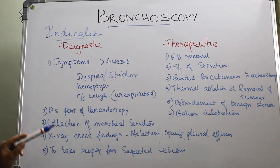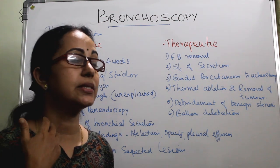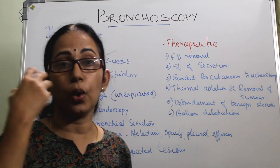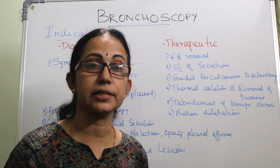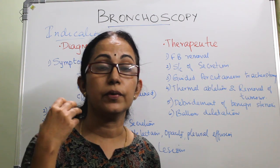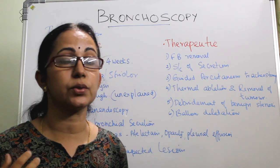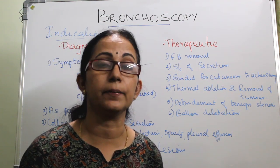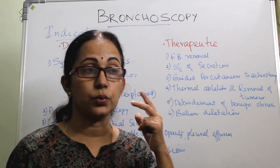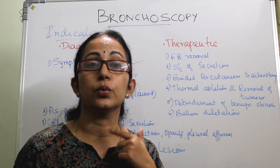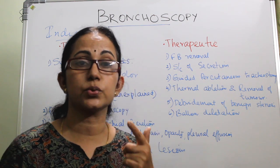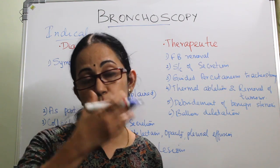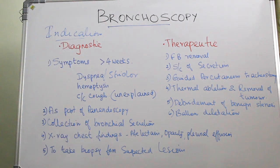Bronchoscopy is also indicated as part of a panendoscopy. If the patient has an unknown primary, we need to look at all areas that drain into a particular lymph node causing its unexplained enlargement. So as part of panendoscopy, we perform diagnostic nasal endoscopy, nasopharyngoscopy, hypopharyngoscopy, direct laryngoscopy, and bronchoscopy — all these areas have to be covered.